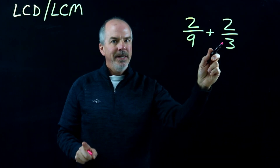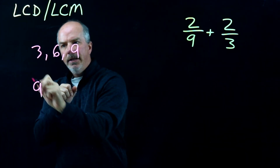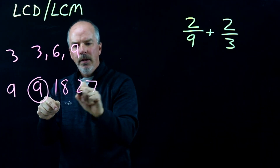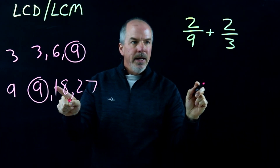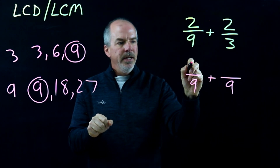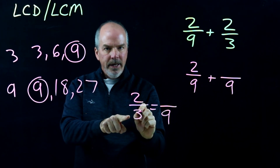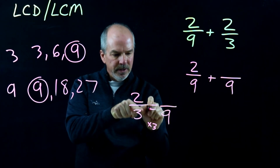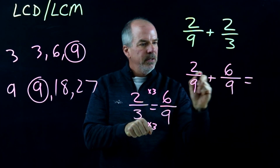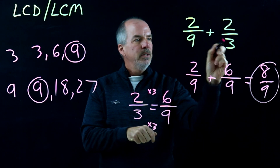2/9 plus 2/3. I have to have a common denominator and I don't, so I'll list them out. Multiples of 3: 3, 6, 9 — there's 9. And for 9, it's just 9. So right away I can see I have 9; my common denominator is going to be 9. Now I need to create equivalent fractions. Well, 2/9 is already at 9, so I just need to convert 2/3 to something over 9. How do I get from 3 to 9? I multiply by 3. So times 3 on the numerator, and we get 6/9. And if we add 2/9 plus 6/9, we get 8/9. So 2/9 plus 2/3 is 8/9.